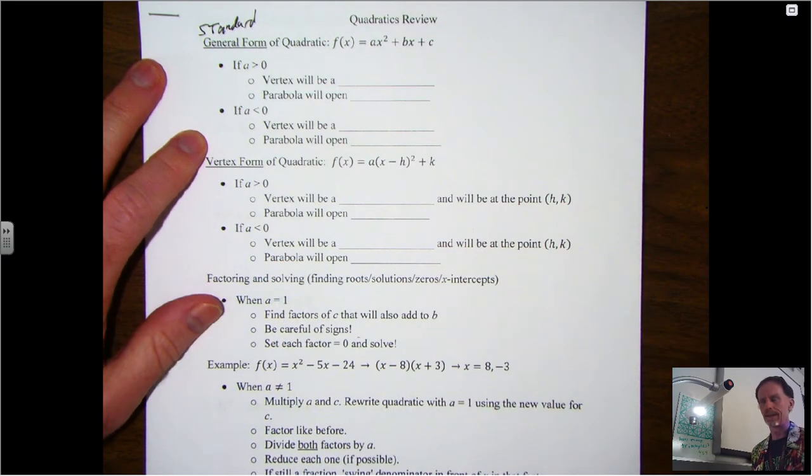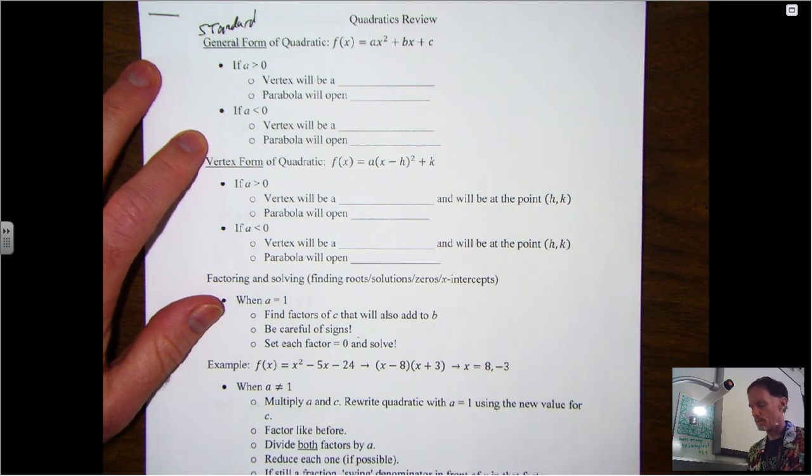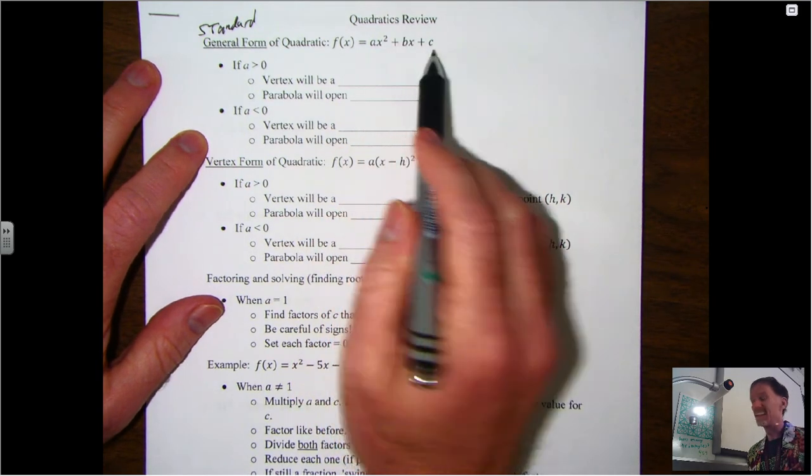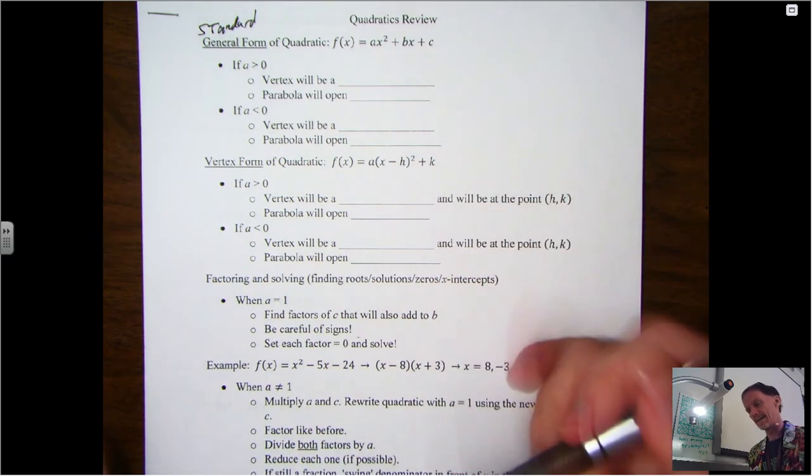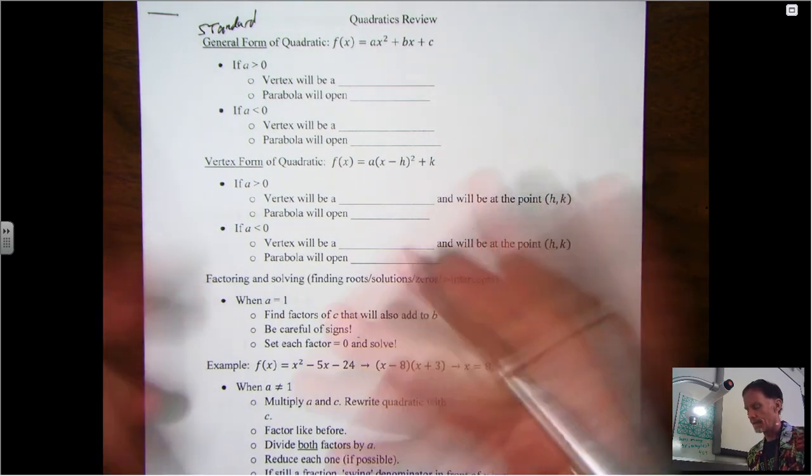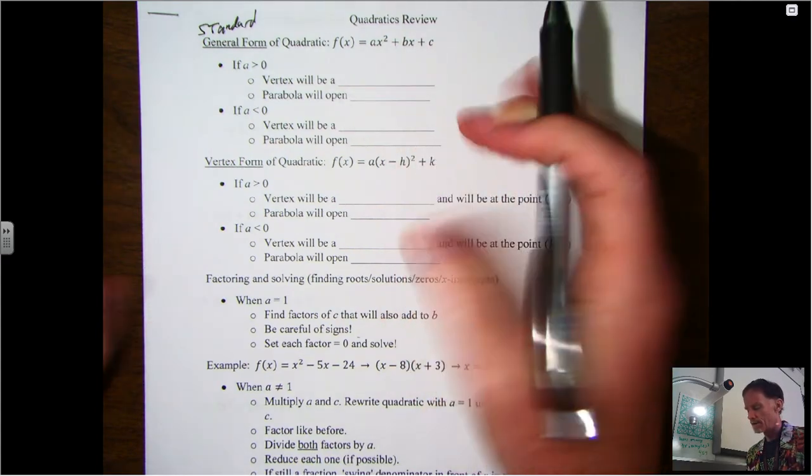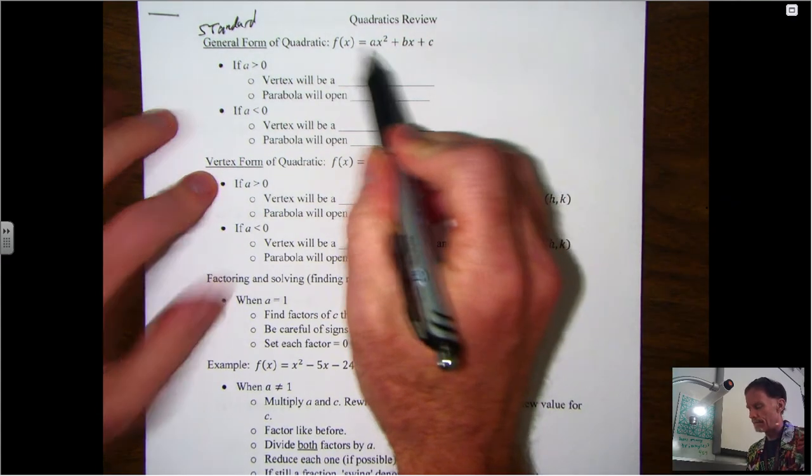This is what we call the general form. You could also see it called standard form depending on the textbook you have or teacher. So standard or general form, it's that ax squared plus bx plus c. That's the most common way you're gonna see those things. That's where you factor it to find your zeros and stuff like that.